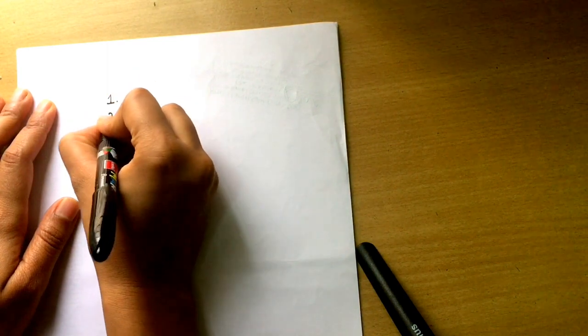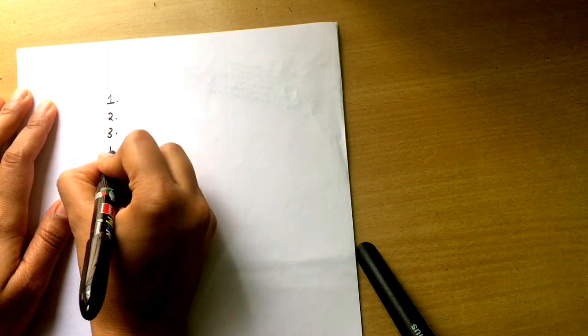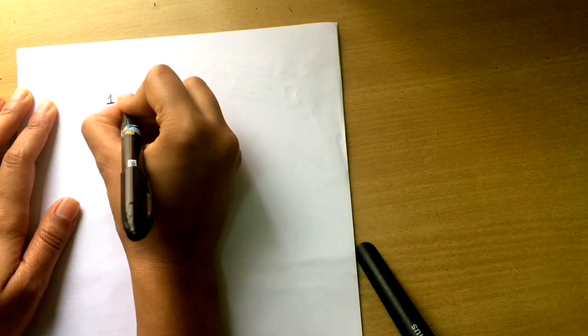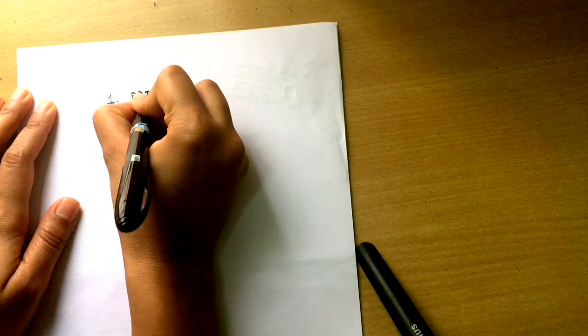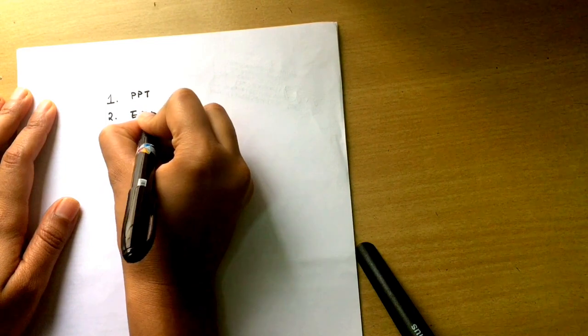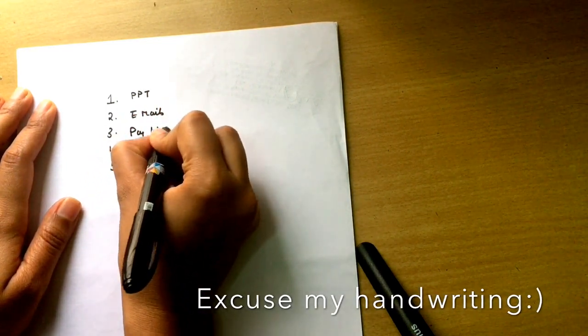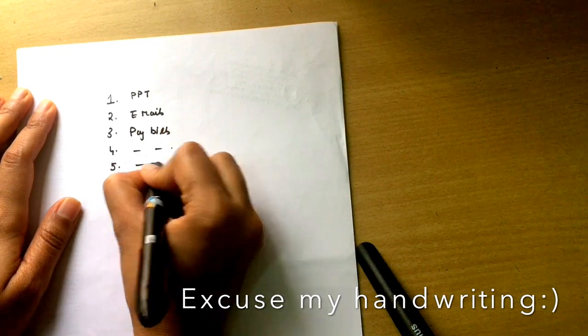This is how most of us make our to-do lists. We list in serial order everything that we need to get done in a day. Let's say, make a presentation, send emails, pay bills, and so on and so forth.